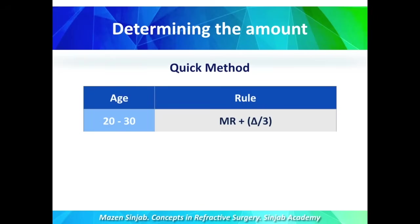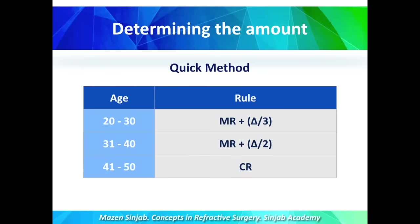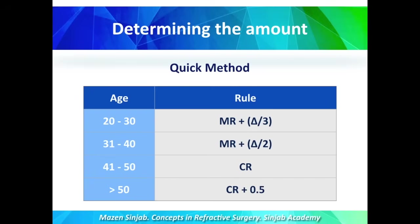The quick method depends on the patient's age. When the patient is 20 to 30 years old, correct the manifest refraction plus one-third of delta. When the patient is 31 to 40 years old, correct the manifest refraction plus half of delta. When the patient is 41 to 50 years old, correct the full cycloplegic refraction. When the patient is above 50 years old, correct the cycloplegic refraction plus 0.5 diopters.